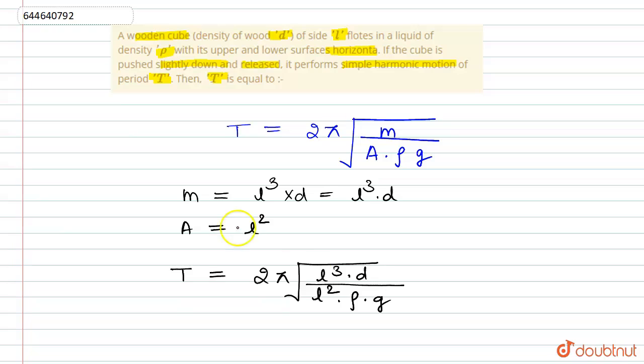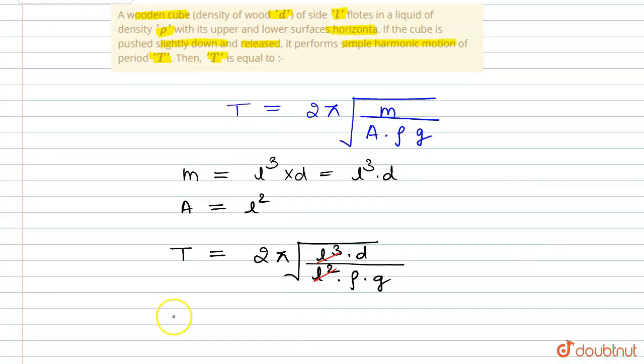The l² terms cancel out, and we get the time period of SHM as T equals 2π times the square root of ld divided by ρg. This is the required time period. Thank you.